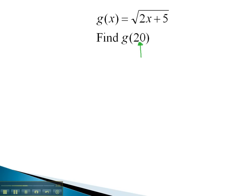If g of x is equal to the square root, we need to replace the x in that function with the 20. This gives us the square root of 2x, which now gets replaced with 20, plus 5.